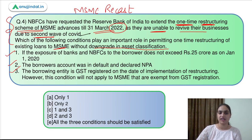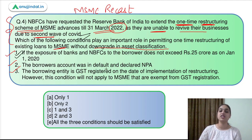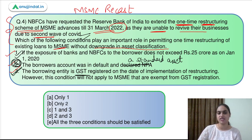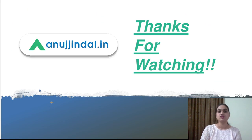We had to identify the correct conditions. The first condition — if the exposure of banks and NBFCs to the borrower does not exceed 25 crore on January 1st, 2020 — this statement is correct. The second one says the borrower's account was in default and declared NPA — no, it should not be declared NPA; it should be a standard asset. So this statement is wrong. The third one says the borrowing entity is GST registered on the date of implementation of restructuring; however, it will not apply to MSMEs exempt from GST — this condition is correct. So only the first and third are correct, which is why the answer is option C. So this was all for today's session. I hope the things are clear and the session was useful for you all. Thank you so much.